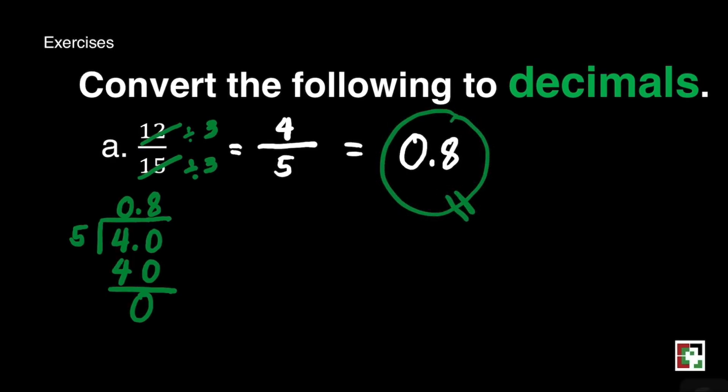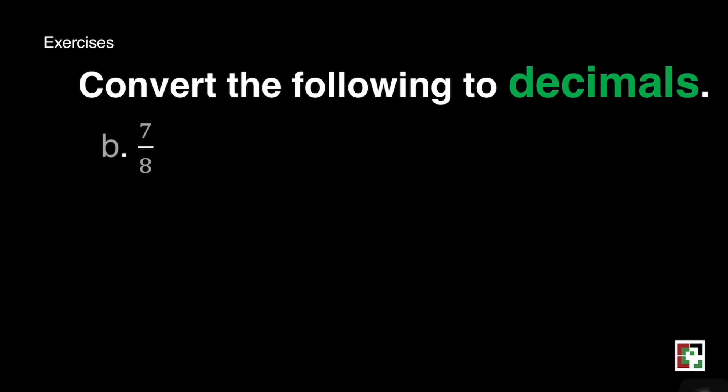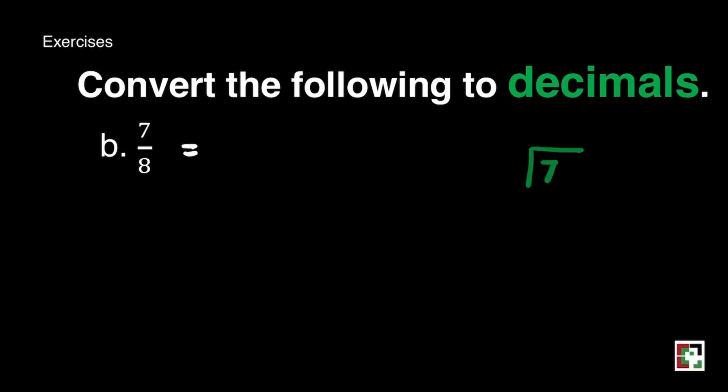Next one. We have here 7 eighths. So just simply divide the numerator by its denominator. And we get 7 divided by 8. We can add 0 there. How many eighths are there in 70? And that is 8.